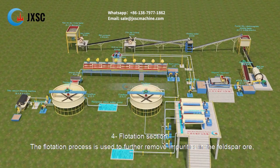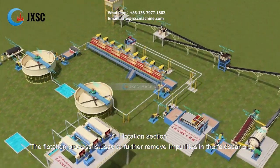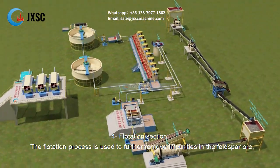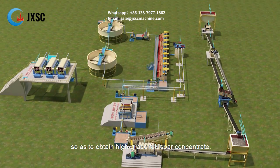4. Flotation section: The flotation process is used to further remove impurities in the feldspar ore, so as to obtain high-grade feldspar concentrate.